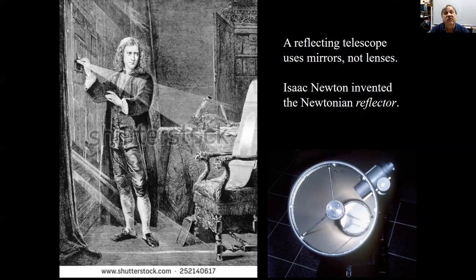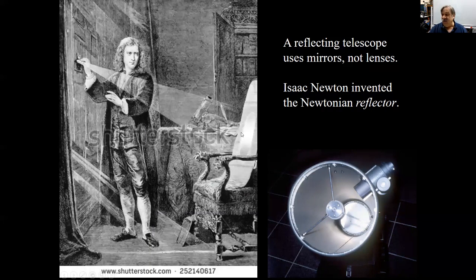Astronomers typically use different technology — namely reflecting telescopes, which use curved mirrors to concentrate light, not lenses. Isaac Newton, during his miracle year — the same year he discovered the laws of motion and gravity and invented calculus — invented a type of telescope, the reflecting telescope. I love this image because it's very symbolic: Newton letting in the light. Isaac Newton invented the Newtonian reflector, a type of reflecting telescope.